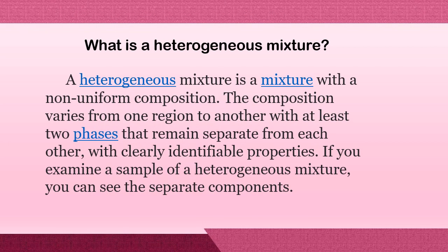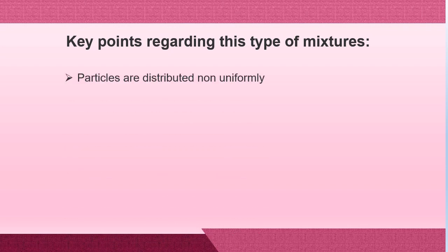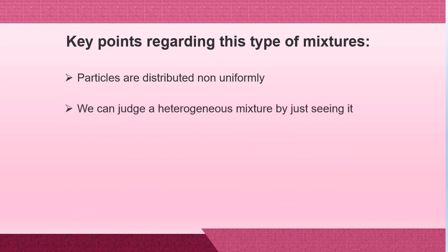Now that you understand what a homogeneous mixture is, let us go to heterogeneous mixture. A heterogeneous mixture is a mixture with a non-uniform composition. The composition varies from one region to another, with at least two phases that remain separate from each other, with clearly identifiable properties. If you examine a sample of a heterogeneous mixture, you can see the separate components. Key points: first, particles are distributed non-uniformly; second, we can judge a heterogeneous mixture just by seeing it; third, non-uniform composition — this is very unlike the homogeneous mixture where particles are distributed uniformly and you cannot tell the different kinds of ingredients.